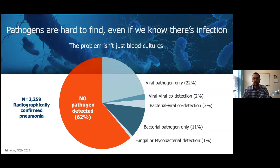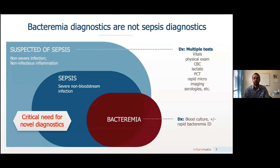It's not just blood cultures. A case series in the New England Journal in 2015 looked at 2,300 patients with radiographically confirmed pneumonia and found that despite an upper respiratory swab, a sputum culture, a blood culture, and urine serologies, no pathogen was detected in 62% of patients that clearly had pneumonia on a chest x-ray. The most common scenario in treating patients up front is not knowing whether a bacterial or viral infection may be present. Bacteremia diagnostics are not sepsis diagnostics. Bacteremia forms only a small subset of patients with sepsis, and patients with sepsis are really only a small subset of the patients that need good sepsis diagnostics — which is those suspected of sepsis.